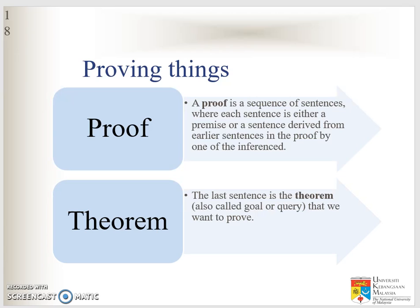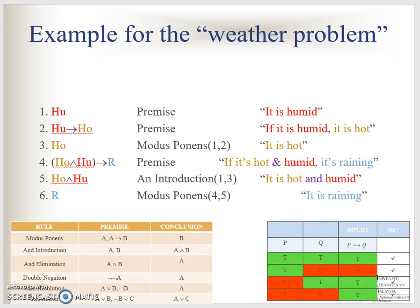We go back a bit to slides before, which is about proof and theorem. Proof is actually all the sequences of sentences that we can get before to prove that we have a conclusion, while theorem is the goal. So we have to look at the weather problem. Given to you is the conclusion — the theorem — that it is raining now.